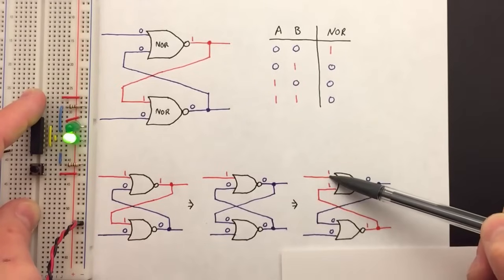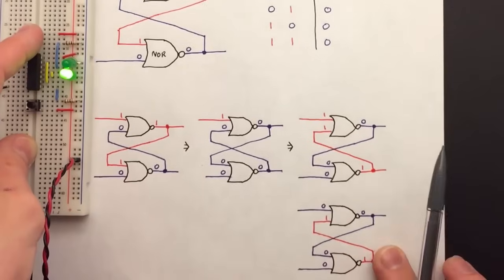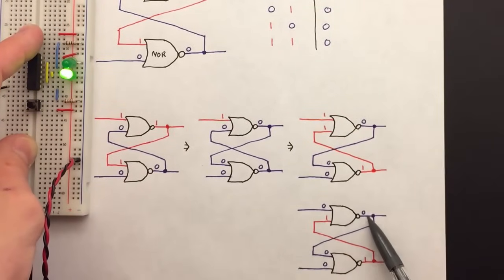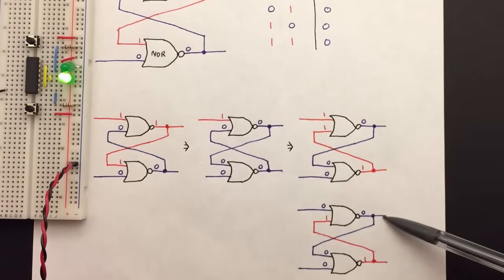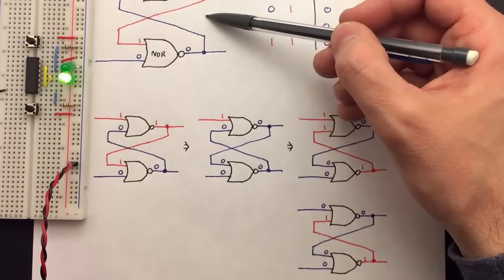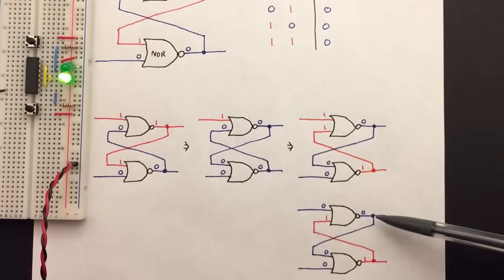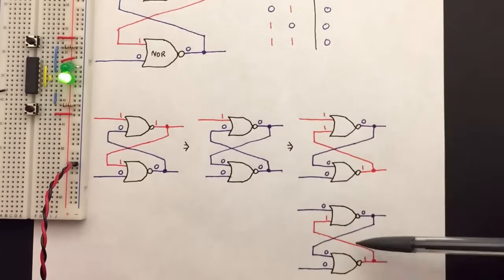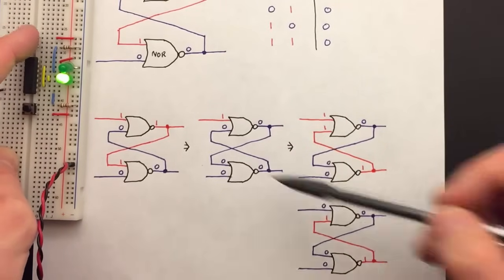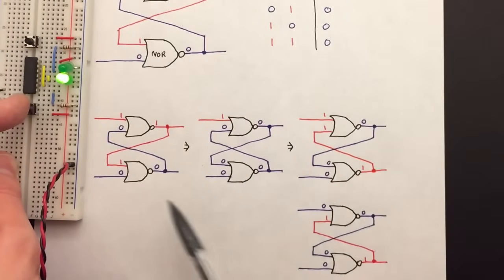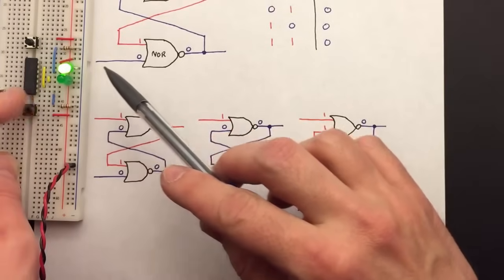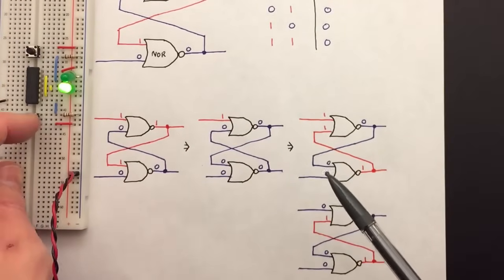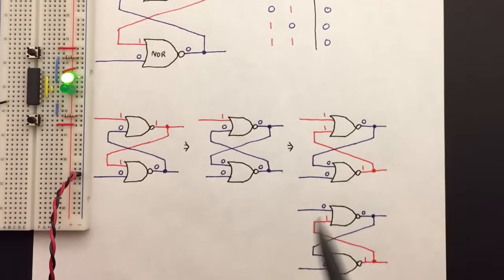Now if we release the top button and this goes to zero, we're in a new stable state. A zero and a one input on the top gate still outputs a zero, so nothing changes. With both inputs off, we've swapped which gate is on — we started with the top gate on and bottom gate off; now the top gate is off and the bottom gate is on. Since this is the mirror image, pushing the top button now has no effect. But pushing the bottom button will run through the same sequence in mirror image and flip back to the top. By pushing these buttons we can flip between one state and the other, and once in that state it stays there until we push the other button.